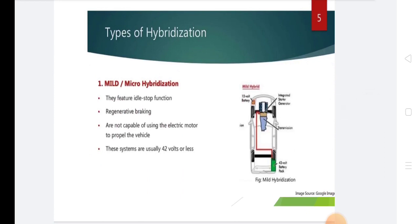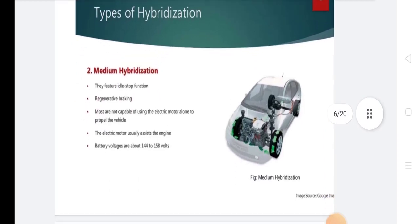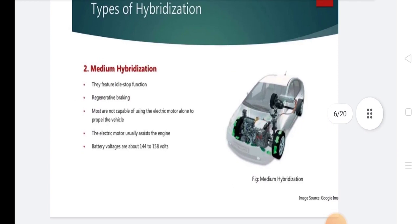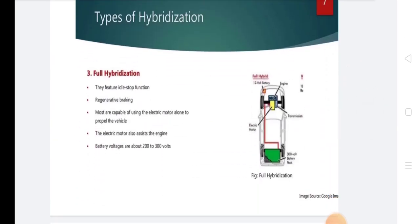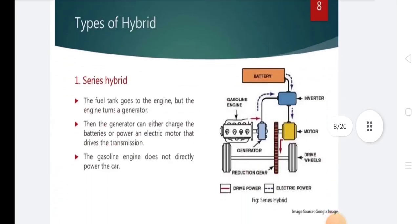The first type of hybridization is mild and micro hybridization. Features include idle stop functions and regenerative braking, but most are not capable of using the electric motor to propel the vehicle. These systems are usually 42 volts or less. In medium hybridization, idle stop and regenerative braking are also featured, and the electric motor usually assists the engine with battery voltage and power boost.